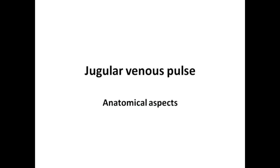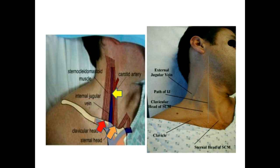Understanding the anatomical aspects of jugular venous pulse is extremely important to properly appreciate the observations on jugular venous pulse at the bedside. You can see two diagrams; the picture on the right shows you the deeper findings expected below the skin in the lateral part of the neck. Let us first identify a few important landmarks before explaining how it is actually seen clinically.